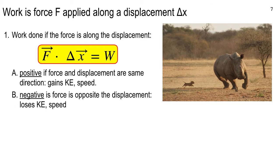On the other hand, if you're moving to the right but the force is to the left, the force is going to start taking away your velocity and slow you down — that means less kinetic energy. Delta KE is always final minus initial, later minus earlier. So for force in the opposite direction to the displacement, you're losing kinetic energy and speed, so the work is negative.